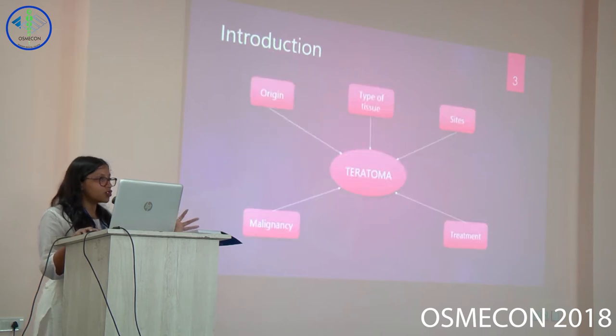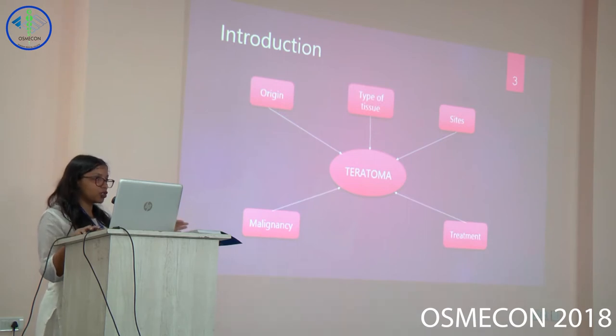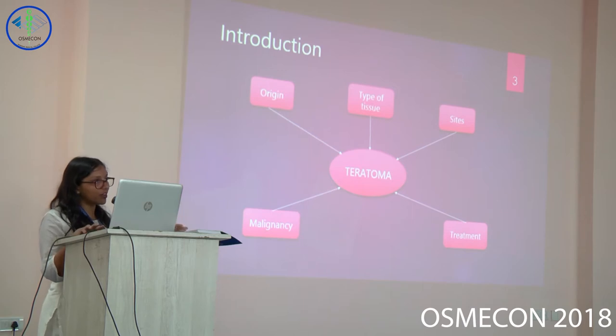Teratoma originates either from all three germlines or two germlines — that is mesoderm, ectoderm, and endoderm. It can be either mature or immature type of tissue. Mature is further divided into solid and cystic.